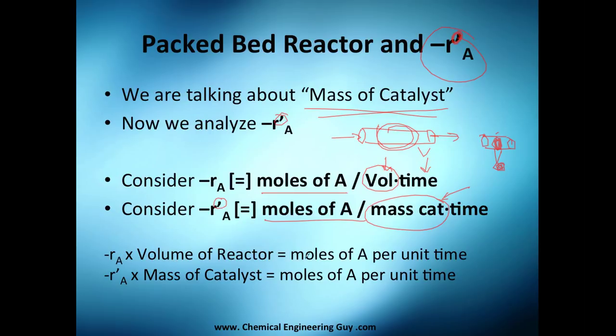Now, rate of reaction times volume of the reactor will give you the moles of A per unit time that are being generated. Now, prima rate of reaction times mass of catalyst is going to give you exactly the same. So just take care. And when you see a prima, ignore the volumes, go to the masses.